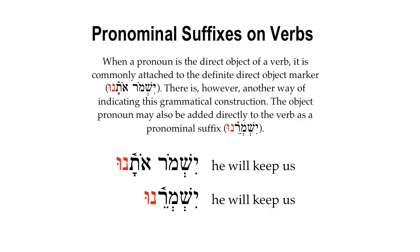When a pronoun is the direct object of a verb, it is commonly attached to the definite direct object marker — yishmor othanu — meaning 'he will keep us.' There is, however, another way of indicating this grammatical construction. The object pronoun may also be added directly to the verb as a pronominal suffix. In the second example, yishmor othanu, you see the 1CP pronominal suffix attached directly to the verb, also meaning 'he will keep us.' Both constructions have the exact same translation value; the difference is simply where the pronominal suffix appears.